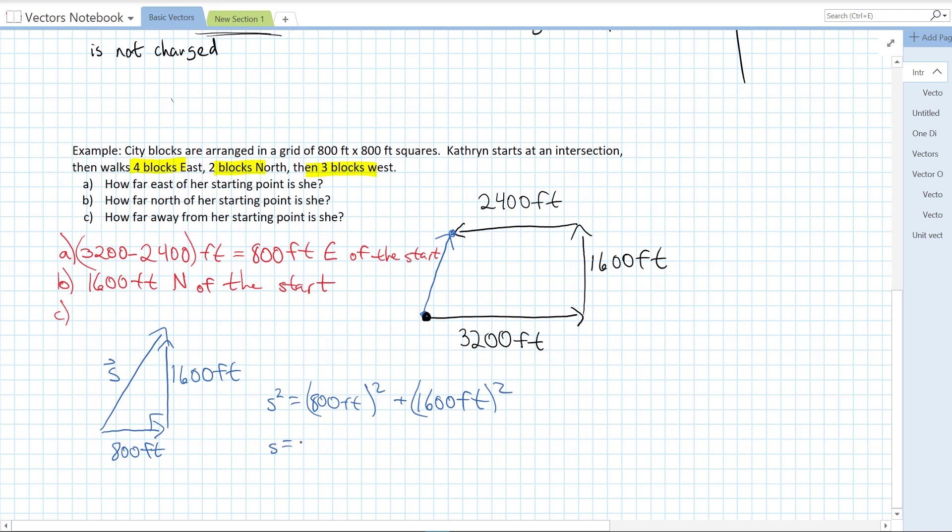We can do S squared equals 800 feet squared plus 1,600 feet squared. So then S is equal to the square root of 800 feet squared plus 1,600 feet squared. And then we just plug that into a calculator, which I am about to do right now.